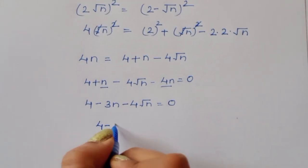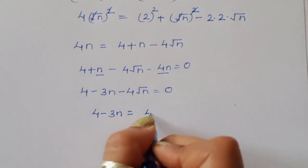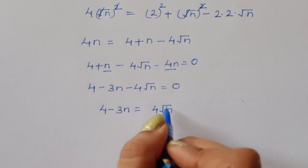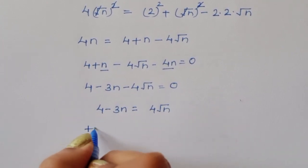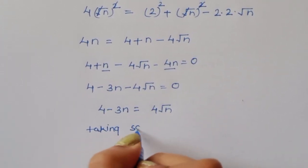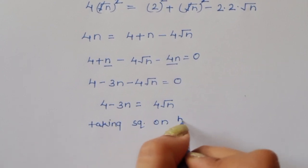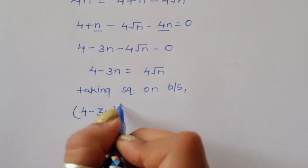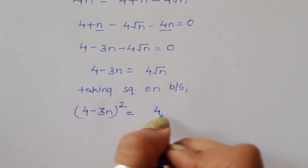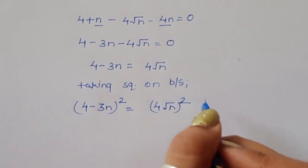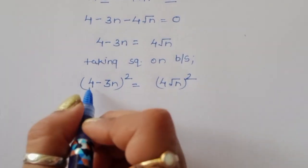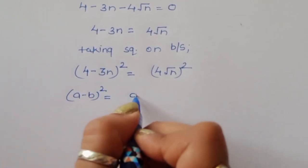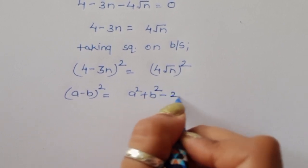Now, 4 minus 3n is equal to 4 square root of n. We need to cancel this square root again, so taking square on both sides. We will get: 4 minus 3n whole square is equal to 4 square root of n whole square. This is the formula of a minus b whole square, so a squared plus b squared minus 2ab.